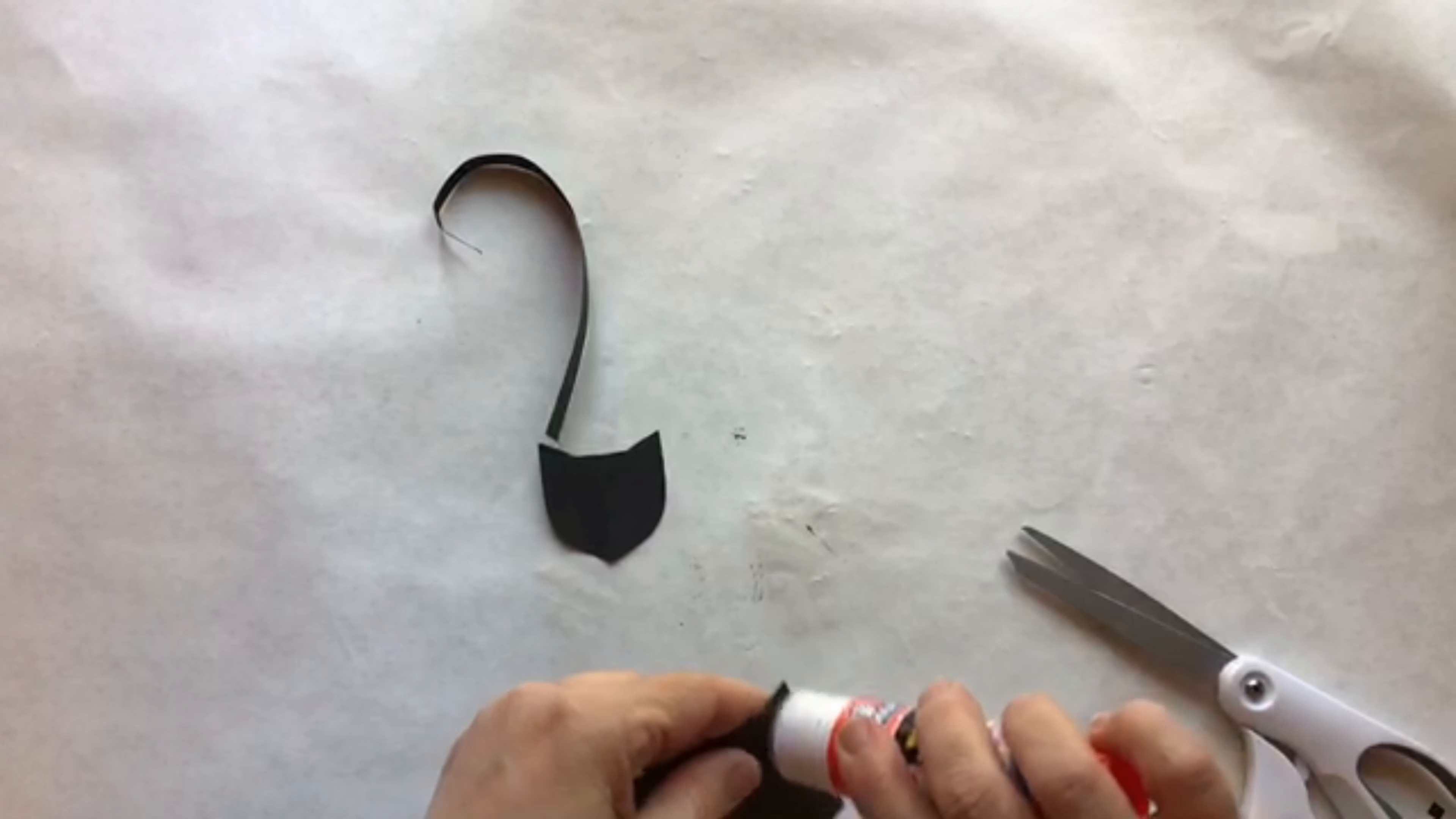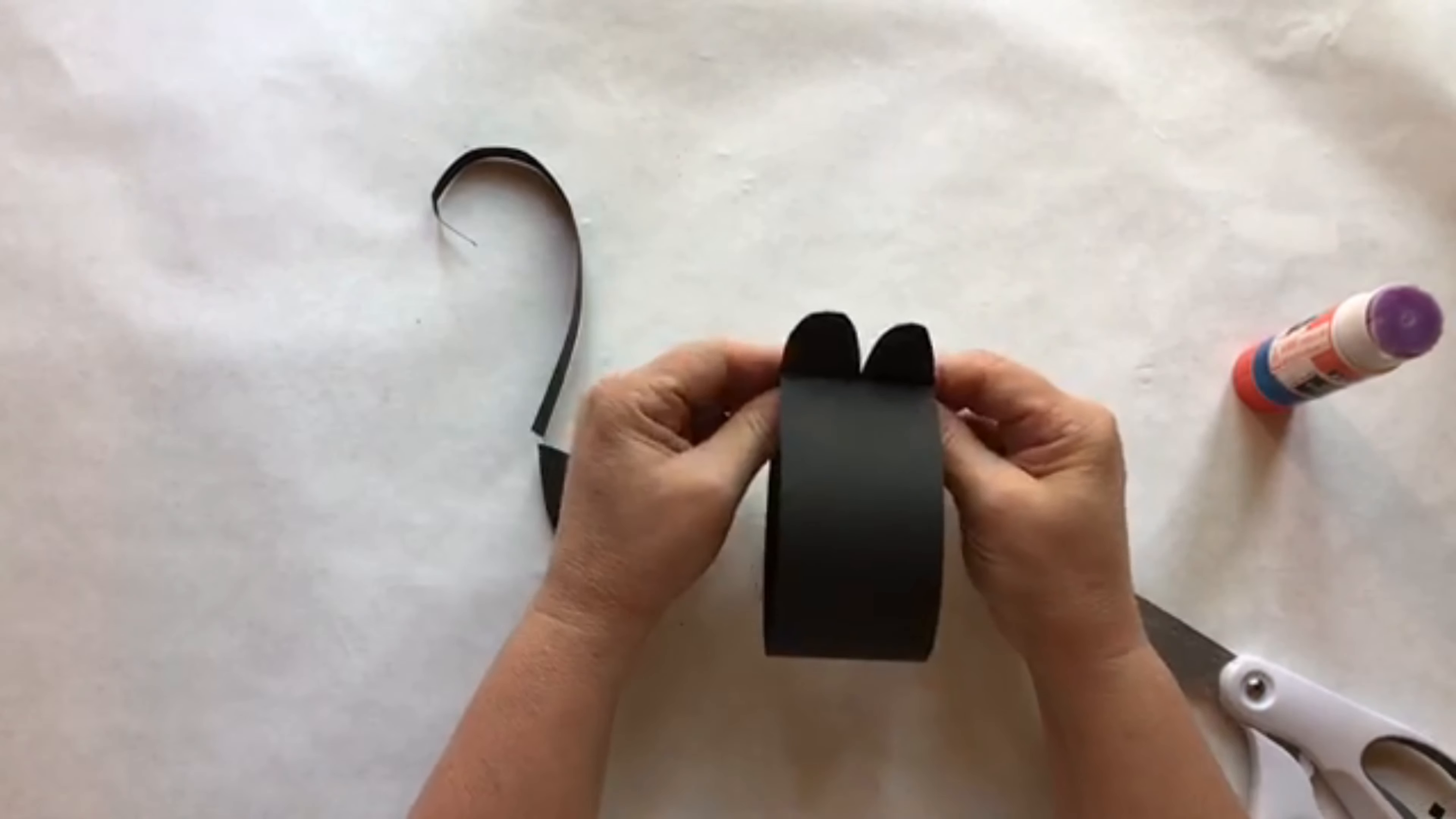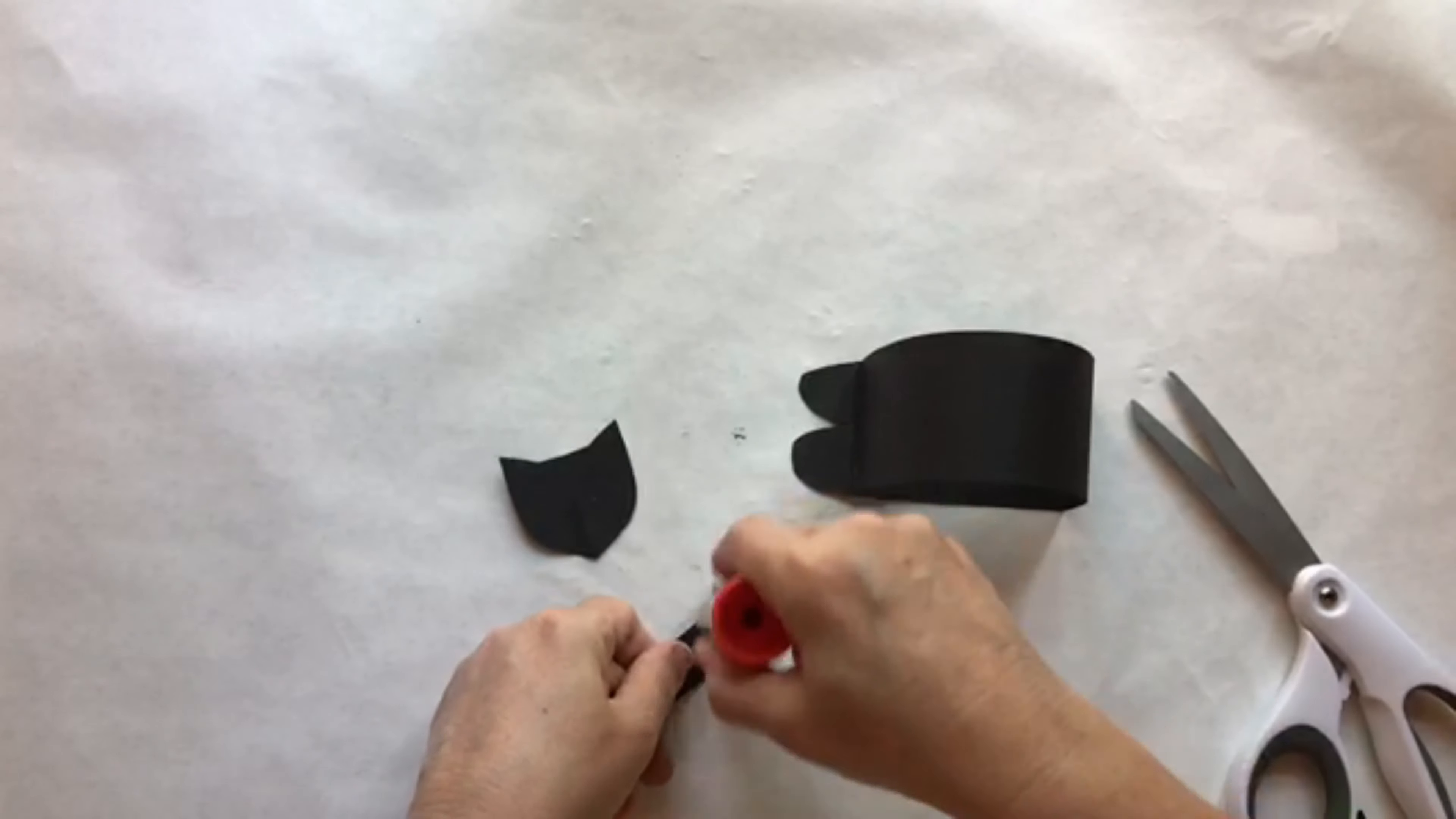Fold the other side about a half an inch in to make a tab. With the underside of the tab, match the fold up with the edge of the paws. Press and hold, count to ten. Now you're going to make a crease on the other side. Glue the tail on.